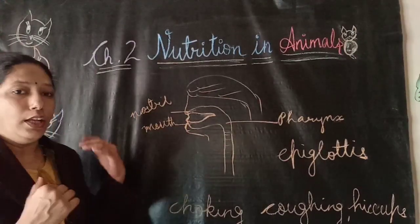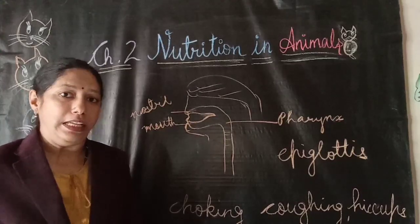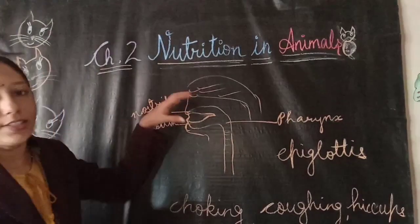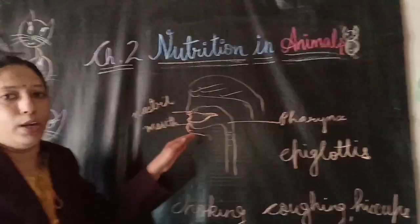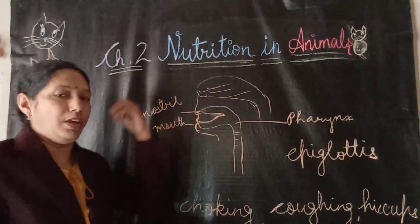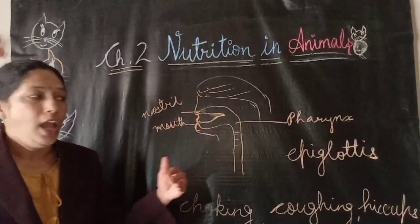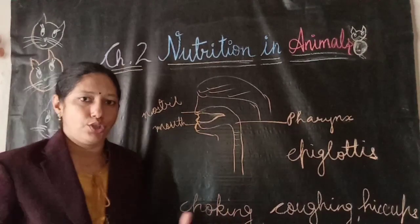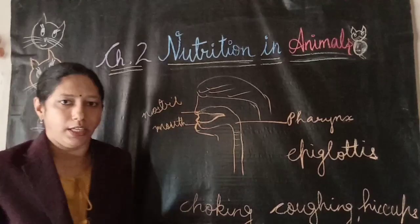However, if we talk, laugh while eating, or eat food in a hurry, there is a chance that the epiglottis may not be able to close the windpipe in time. The food may then go into the windpipe instead of the food pipe, which is why we may have coughing or get hiccups.